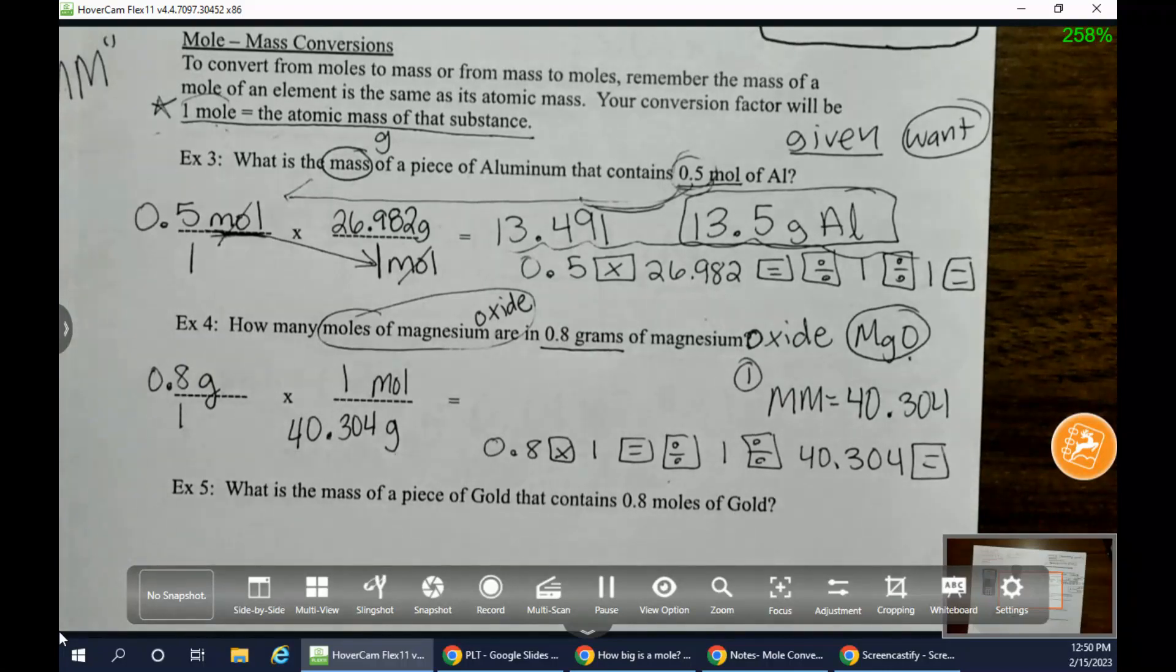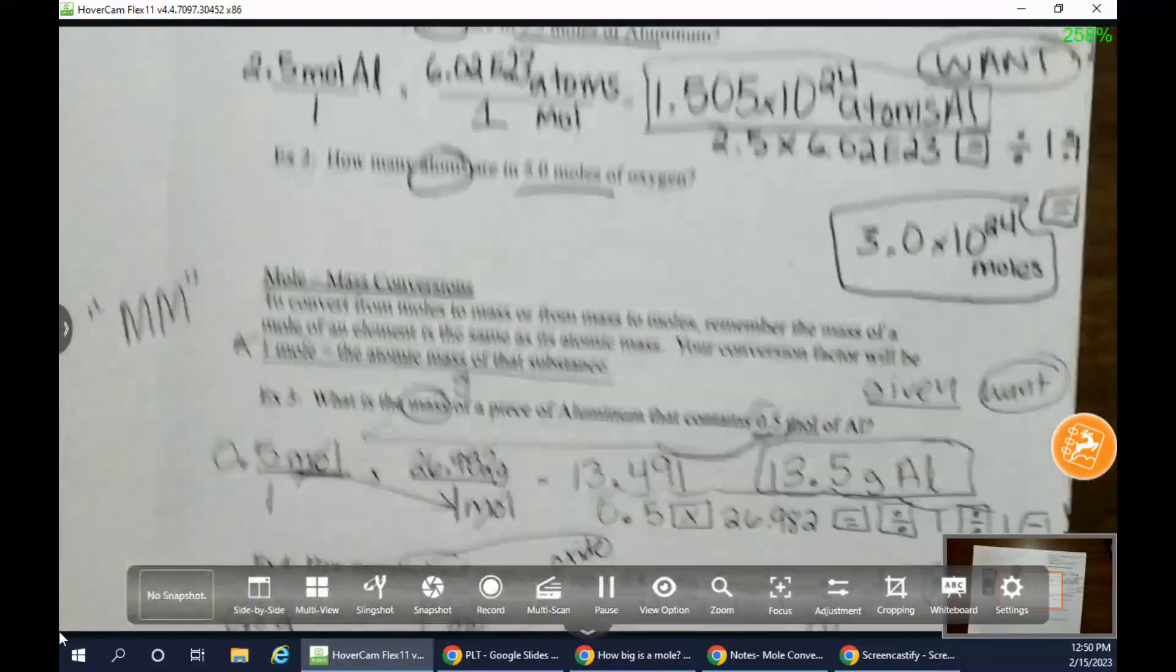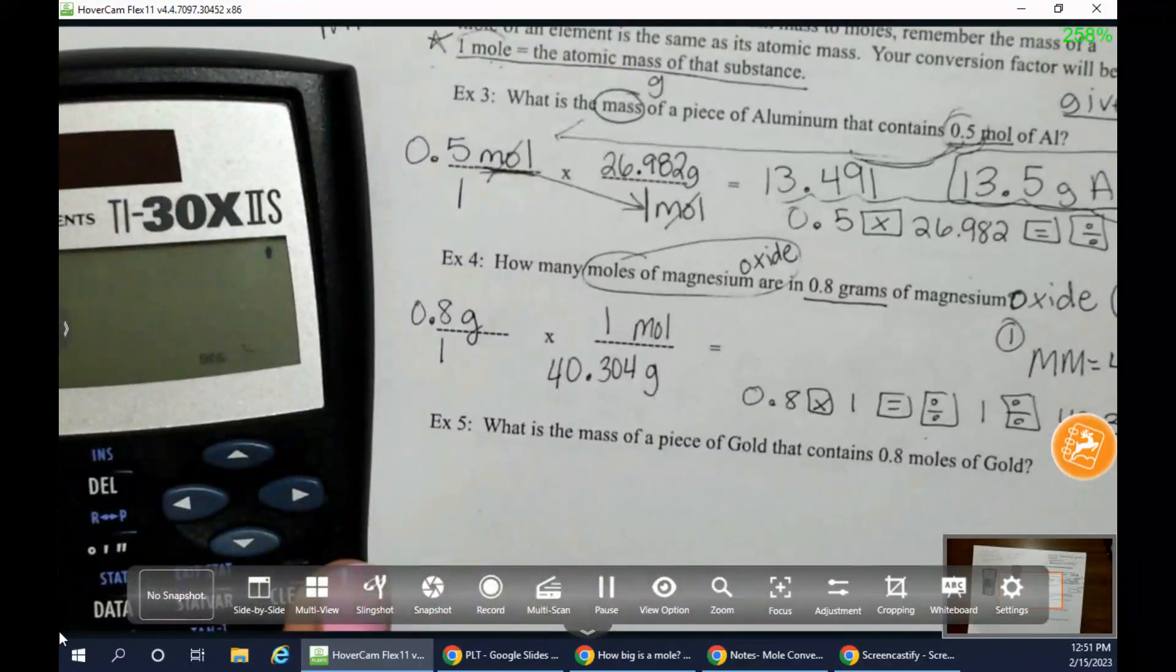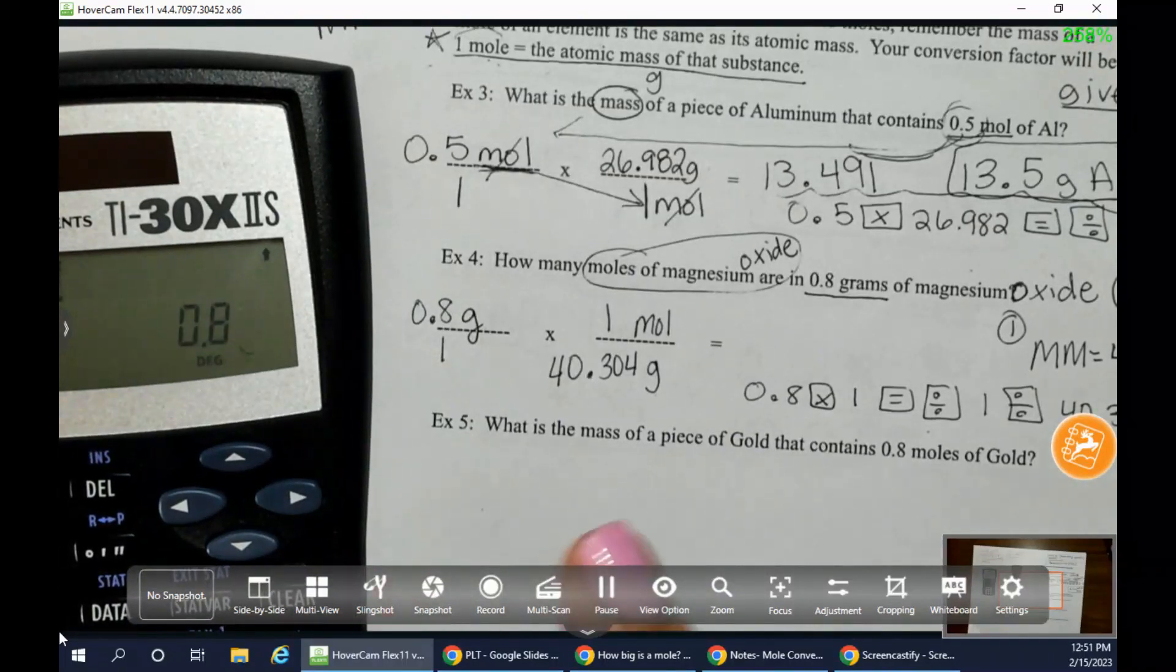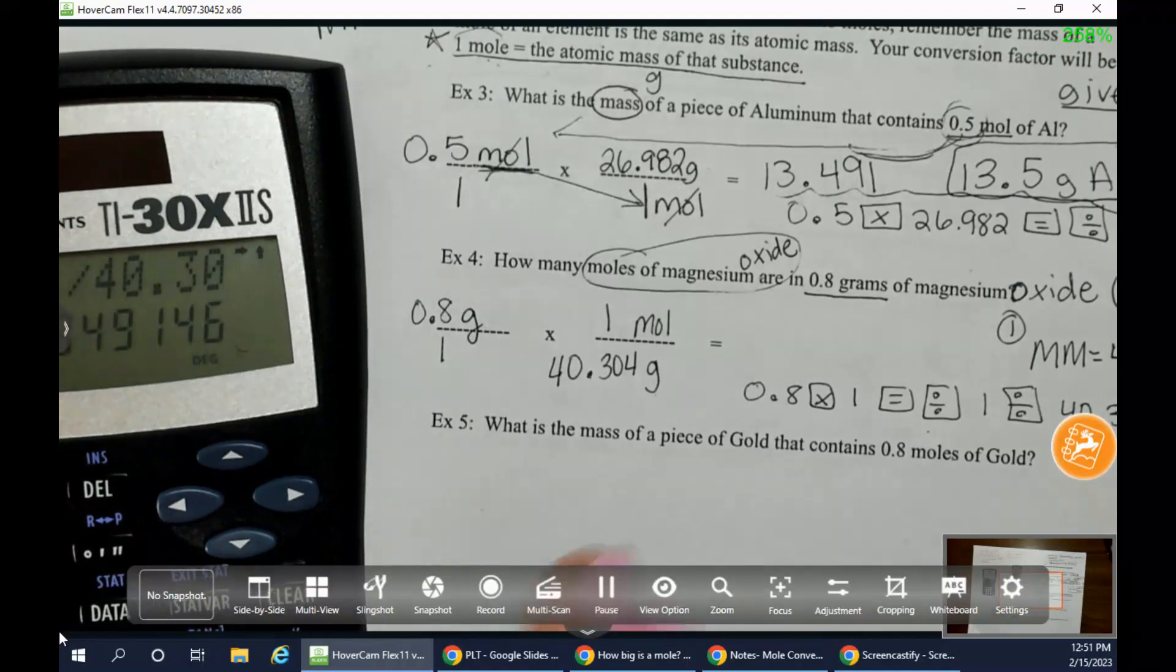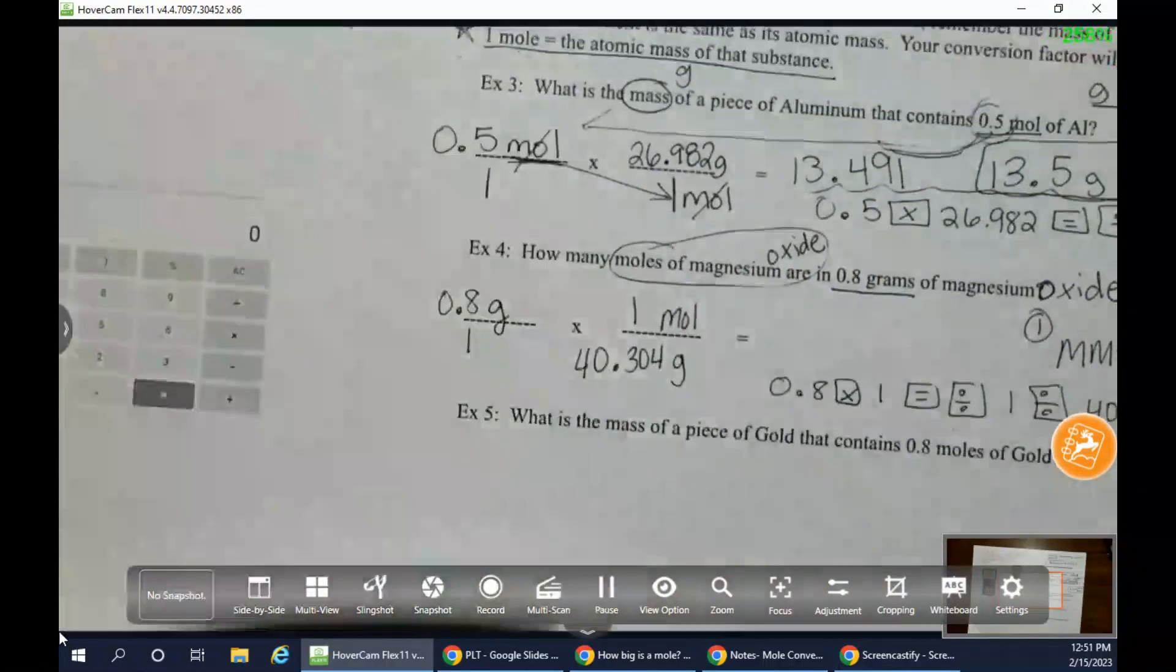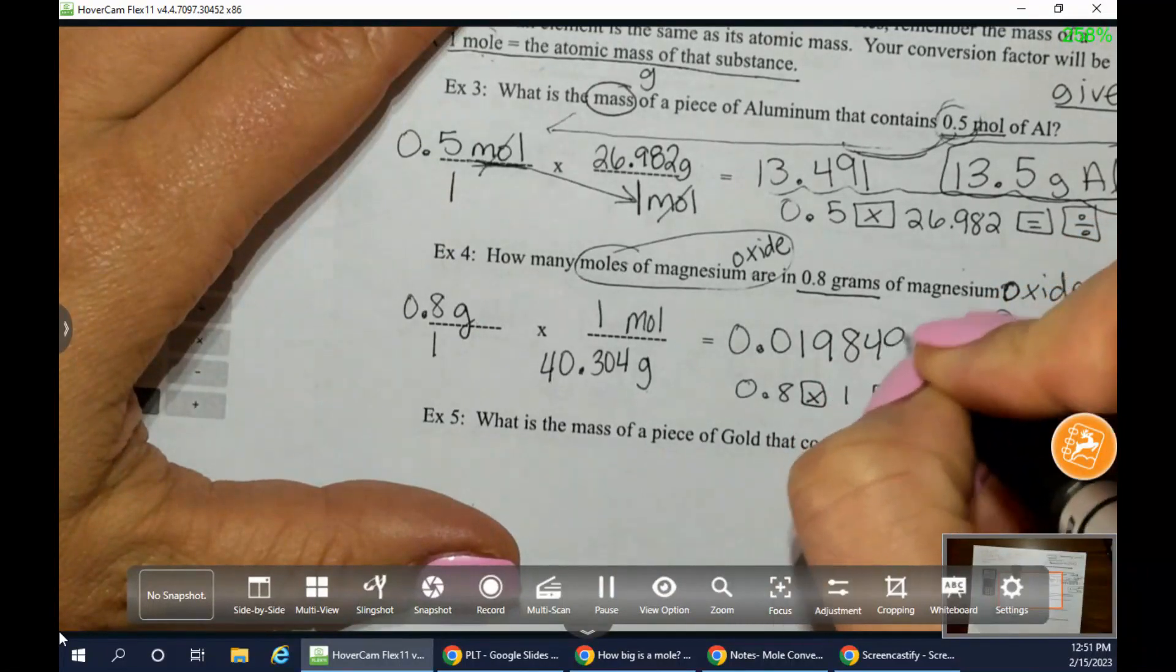So I'll go ahead and type in exactly what I just put up there so you can see what it looks like. Let me scoot my camera back. Hold on. All right. There we go. So I have 0.8 times one push equals divided by one divided by 40.304. And I get the answer of 0.019849, right?